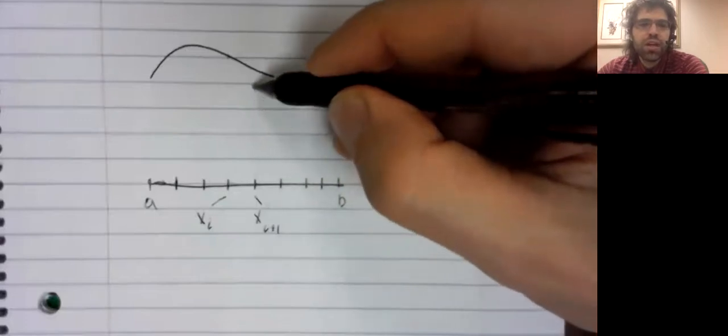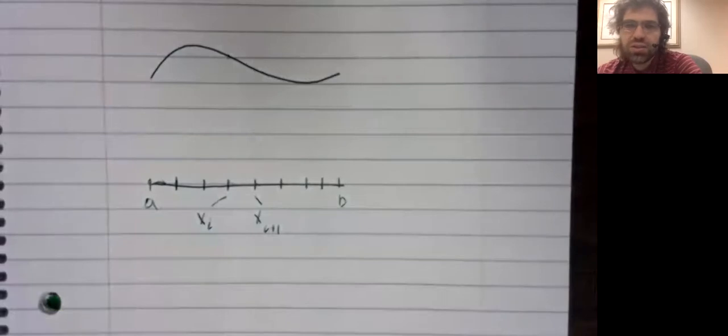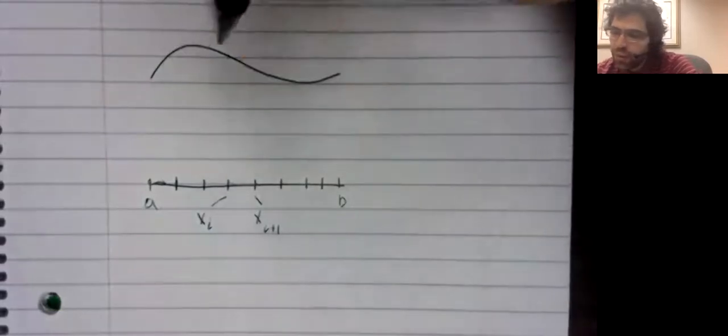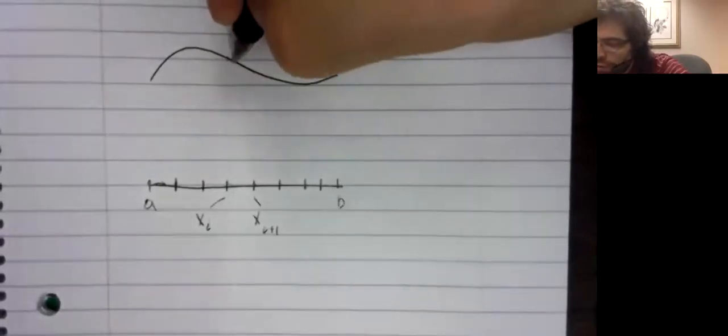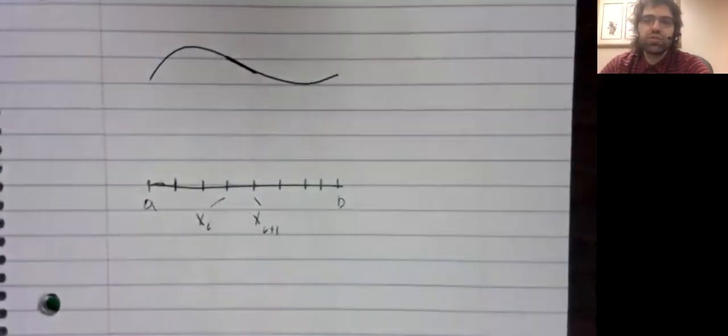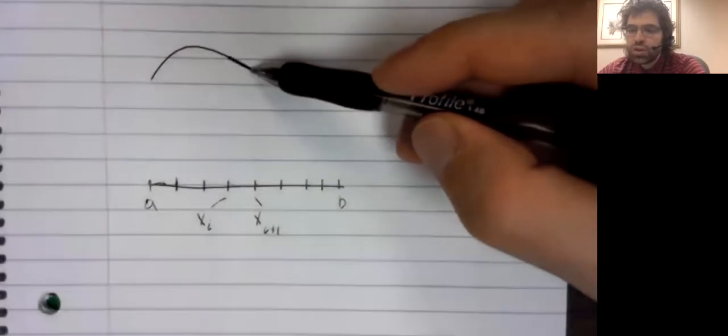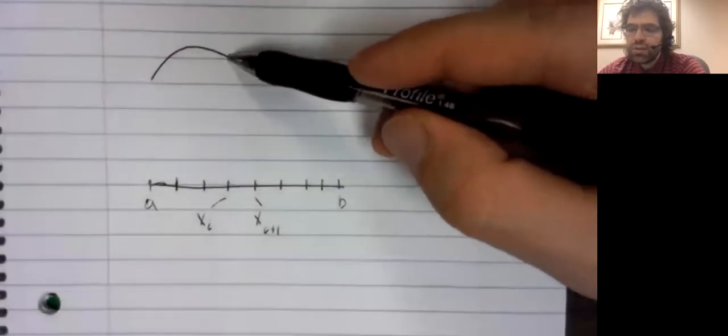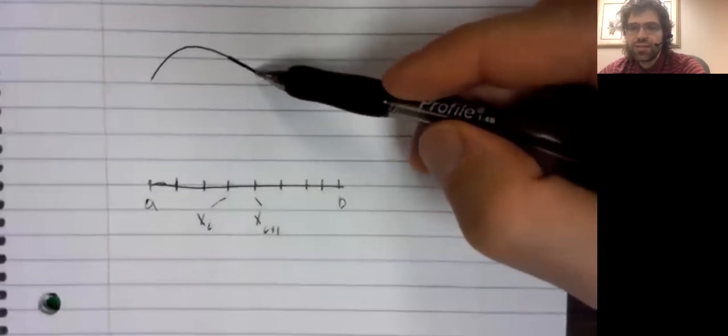And this time, our approximation tool is not going to be rectangles, but straight lines. We'll make the observation that on a small enough interval, the curve looks an awful lot like a straight line. And so we can approximate the arc length on this interval by finding the length of this line segment.